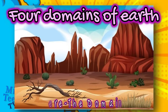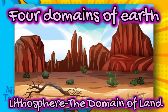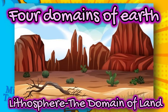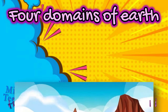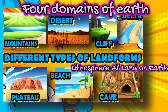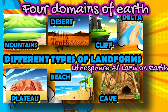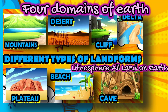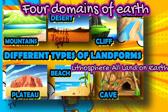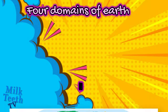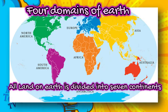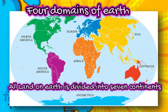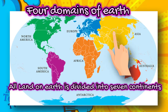Lithosphere, or the domain of land. The lithosphere is formed by all portions of land on Earth. The land on Earth consists of various landforms like mountains, deserts, cliffs, deltas, plateaus, beaches, and caves. All land on Earth is divided into seven main continents, with Asia being the largest.